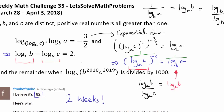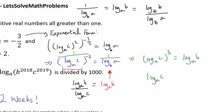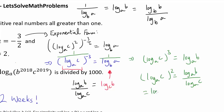Dividing both sides by log base a of c, we get log base a of c squared equals log base a of b over log base a of c, which equals log base c of b. So we have this equation connecting log base a of c and log base c of b.